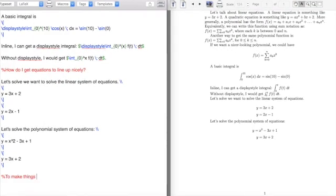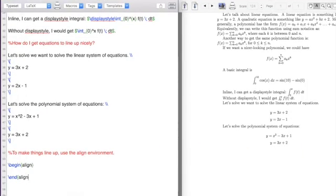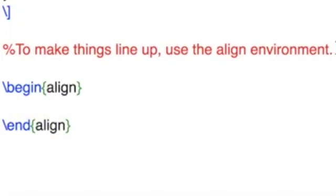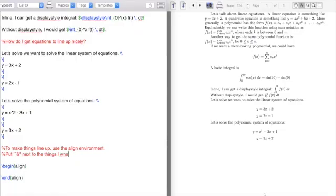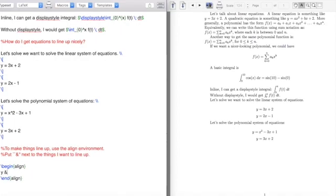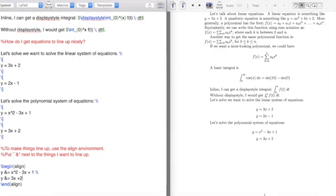To do that, I can use the align environment. So I'm going to do, again, align and align, and inside the align environment, I put ampersand next to the things I want to line up. I would do y ampersand equal x squared minus 3x plus 1, and then y ampersand equal 3x plus 2.